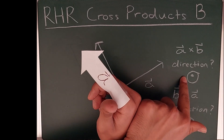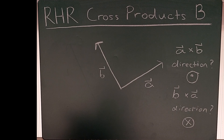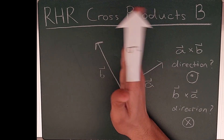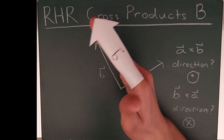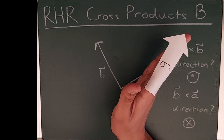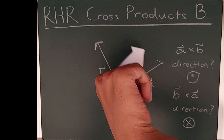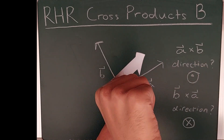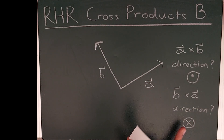Just like the other method, A cross B here is out of the page. For B cross A with this method, align all your fingers in the direction of vector B and curl them in the direction of A. You'll likely need to invert your hand to form the fist. After inverting, the thumb points down into the page — so B cross A is into the page, consistent with what we found before.